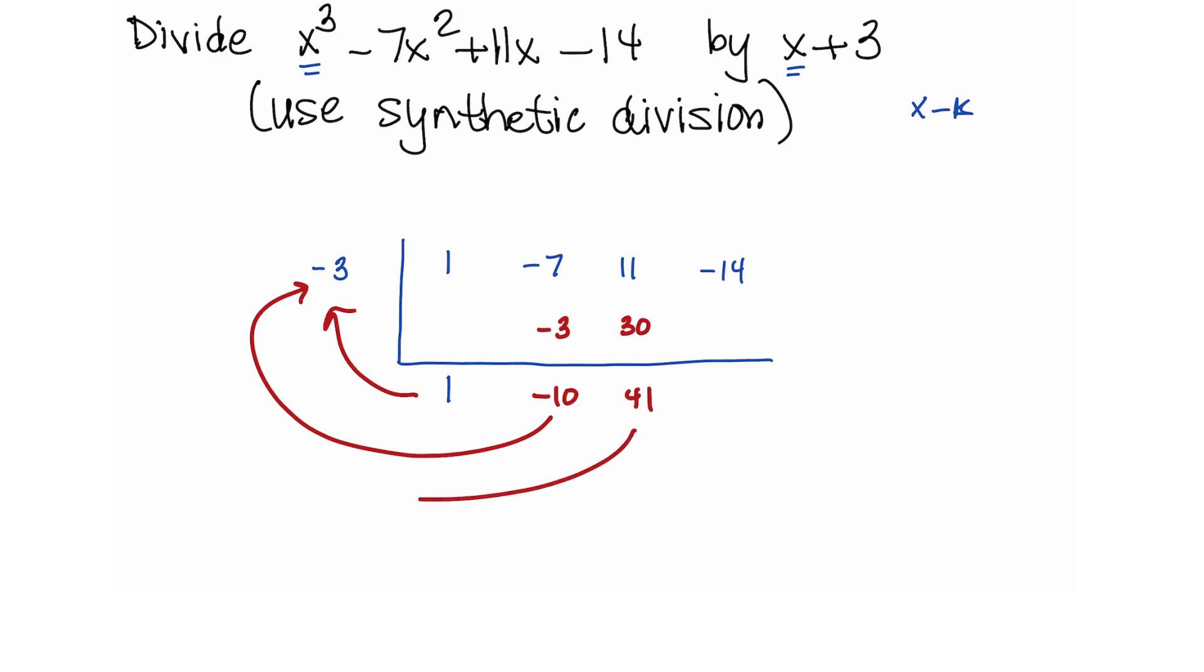And then we take 41 times negative 3, which is negative 123. Add that to negative 14. And that result is negative 137.